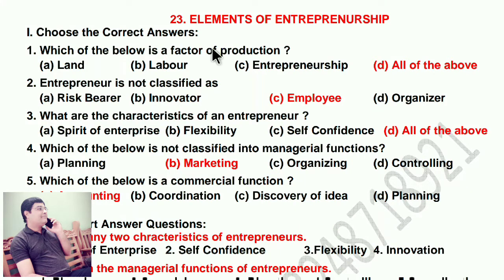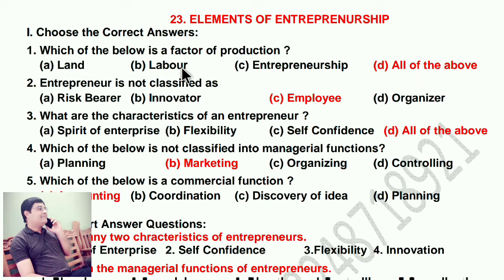Hello friends, welcome to our new session. Plus 2 Commerce Lesson No. 23, Elements of Entrepreneurship. Choose the correct answer. Which of the below is a factor of production? All the above is the answer.